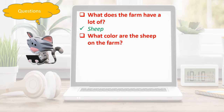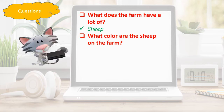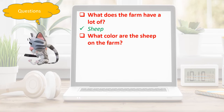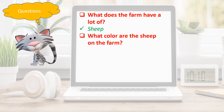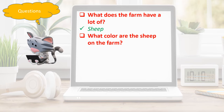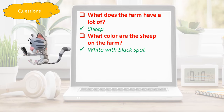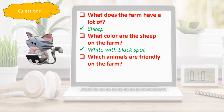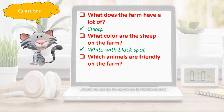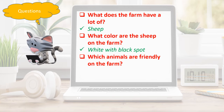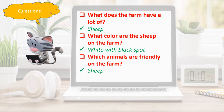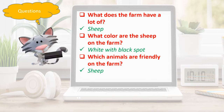What color are the sheep on the farm? The answer is white with black spots. Which animals are friendly on the farm? The answer is sheep.